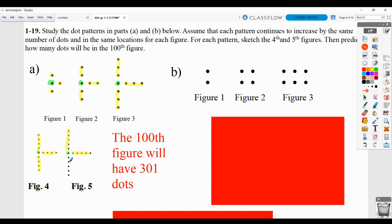As far as figure 100 goes, figure 100 should have 301 dots because it would have the one in the middle, the green. And then it would have 100 above, 100 to the right, 100 below. So 100 plus 100 plus 100 would be 300, plus that one in the middle would be 301.